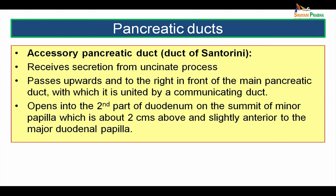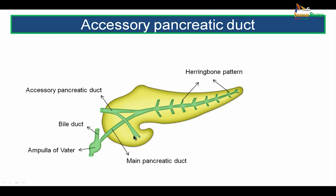The accessory pancreatic duct, also known as the duct of Santorini, receives secretion from the uncinate process, passes upwards and to the right in front of the main pancreatic duct, with which it is united by a communicating duct. It opens into the second part of the duodenum at the summit of the minor duodenal papilla, which is about 2 cm above and slightly anterior to the major duodenal papilla.